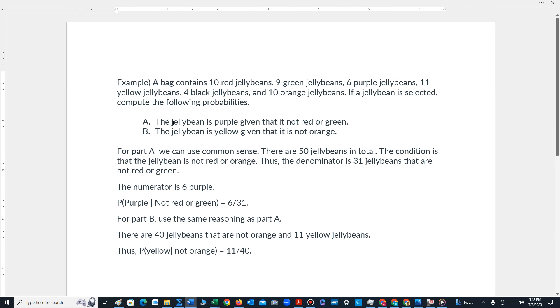Part A is saying the jelly bean is purple given that it is not red or green. The condition in that case is not red or green. Part B, the jelly bean is yellow given that it is not orange.